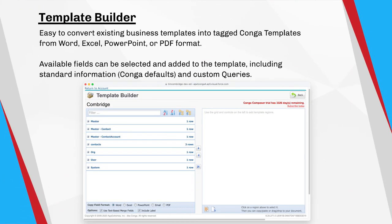Now let's look at how to build templates for Conquer. The template builder makes it super easy to convert your existing business templates into tagged Conquer templates, from Word, Excel, PowerPoint, or PDF formats. Inside the template builder, you'll see a list of available records and fields pulled from standard information that Conquer pulls in as default each time.